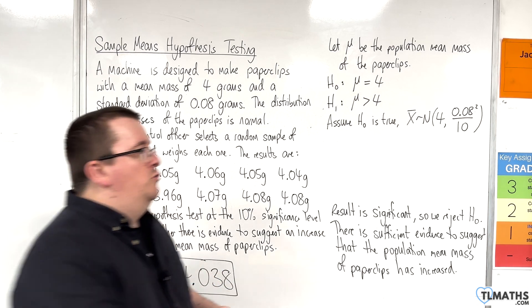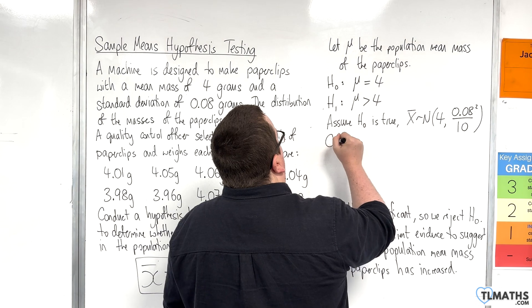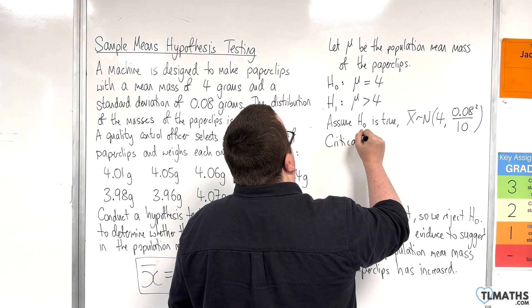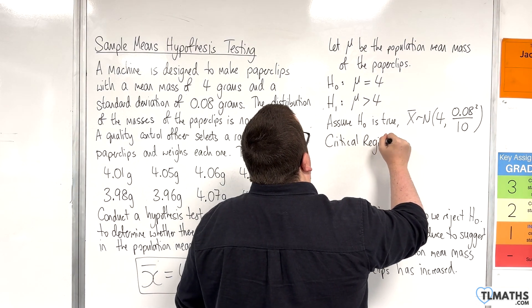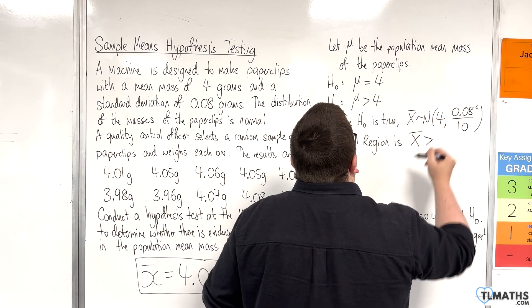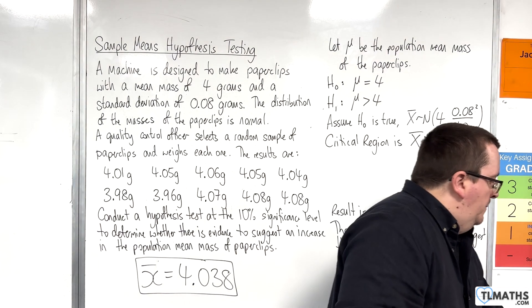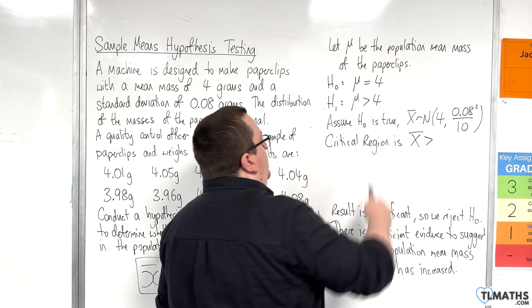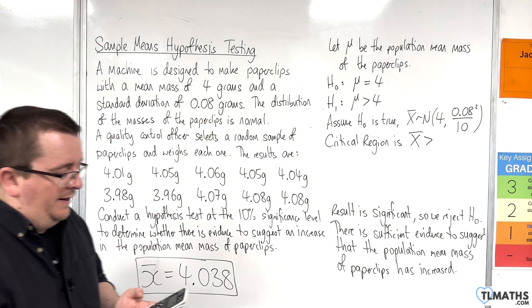So, we need to find the critical region. Critical region is x-bar is greater than, because we're going to be going in the same direction as the inequality. So, how do I do that on the calculator?